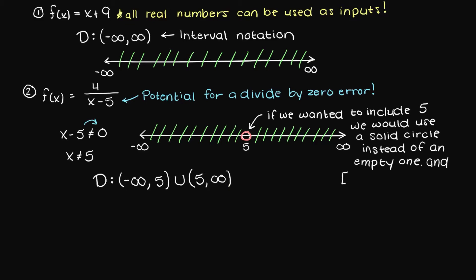Then we need a capital U, which is a union, and basically means 'and'. Now, round bracket again to not include 5, to positive infinity. We can read this as a whole, as the domain of the function is negative infinity up to, but not including 5, and from, but not including 5, to positive infinity.